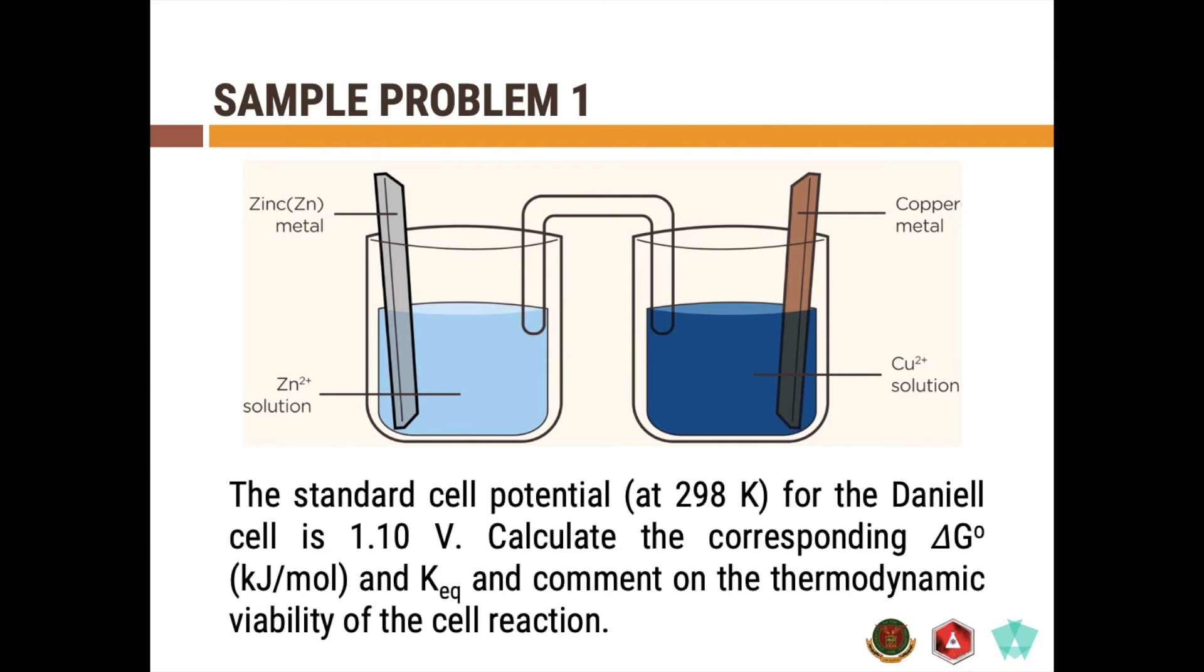Now, let's consider this sample problem number one. You have here a very common Daniell cell with a standard cell potential of 1.10 volt. Now, this 1.10 volt is calculated using the standard reduction potential of the zinc couple and the copper couple. So you can use a standard reduction potential table for this and the problem asks us to calculate the corresponding...